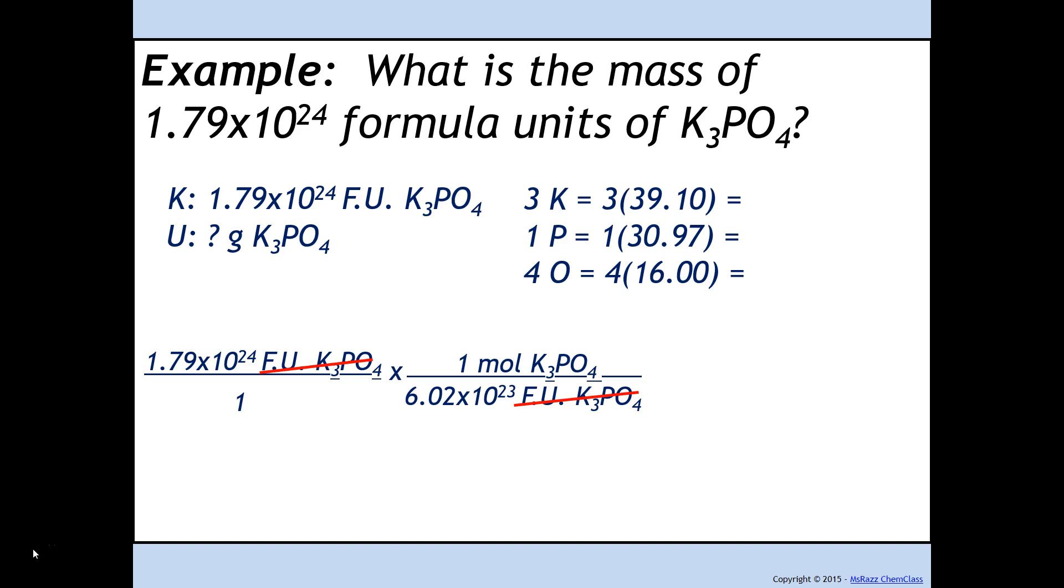We have three potassiums, one phosphorus, and four oxygens. These should be the individual molar masses that you get. You have to add them together, and that will be the molar mass of potassium phosphate.